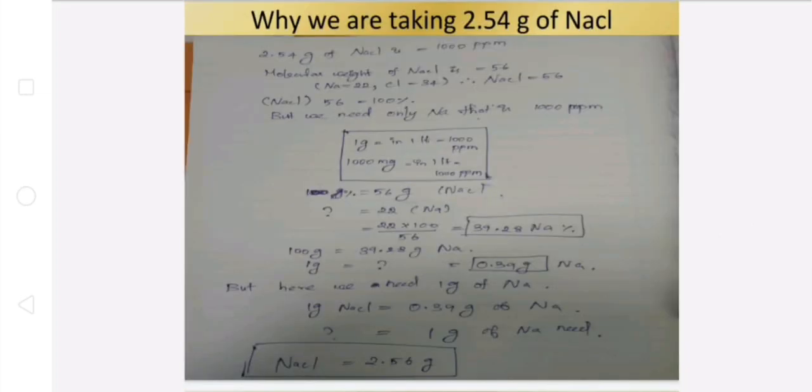Why are we taking 2.54 g of sodium chloride? That is how we calculate. 1 liter of water is 1000 ppm.